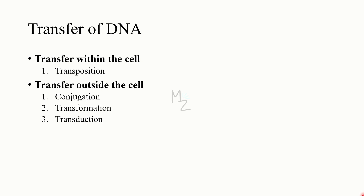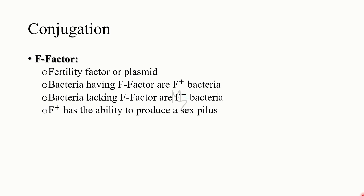Transfer of DNA can occur within the cell or between two cells. If the transfer occurs within the cell, it uses a method called transposition. If the transfer occurs between cells — outside the cell — it occurs through conjugation, transformation, or transduction. We'll first talk about transfer between two cells, and then transfer within the cell.